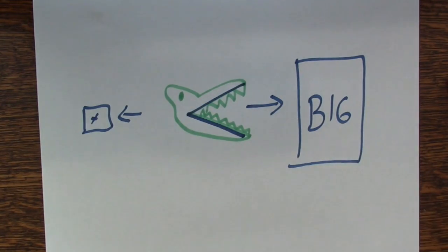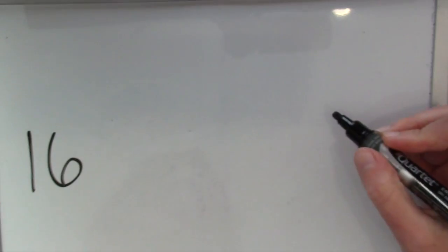So look at the shape of his mouth. It's bigger towards the side of the bigger numbers. So let's try this with some actual numbers.